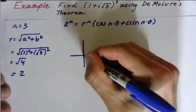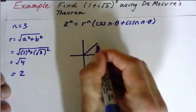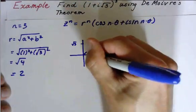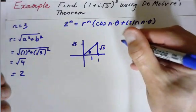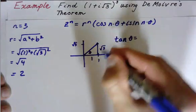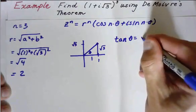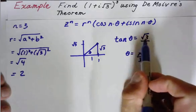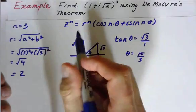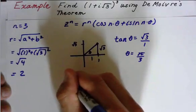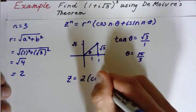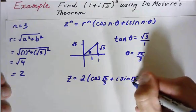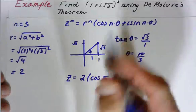Theta comes from, if we go ahead and draw this out, we have 1 and this value right here is √3, and here's theta. So we have √3 and 1. Using the tangent, we can say tangent of theta equals opposite over adjacent, which is √3 over 1. That means theta is equal to π/3 — meaning, what angle gives me a tangent of √3? It's π/3.